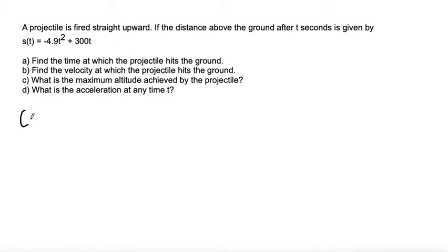So let's set 0 equals negative 4.9 t squared plus 300t. And to solve this equation for t, we can factor out a t. So we get 0 equals t times negative 4.9 t plus 300.